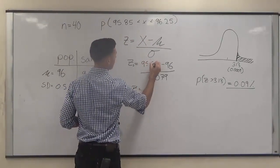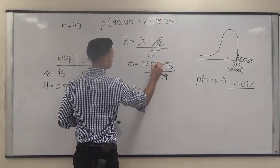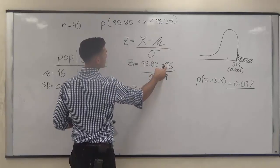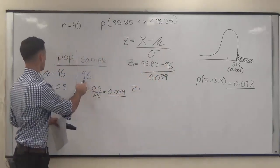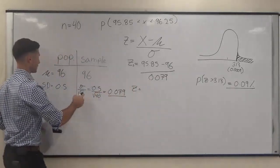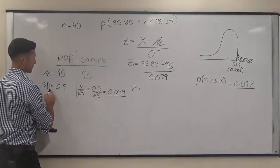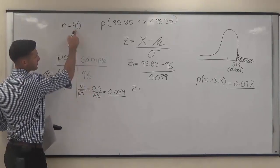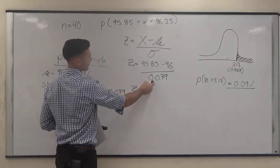95.85 minus 96, which from earlier is our sample mean, divided by the sample standard deviation, which we found here by taking the standard deviation divided by radical n, 0.079.